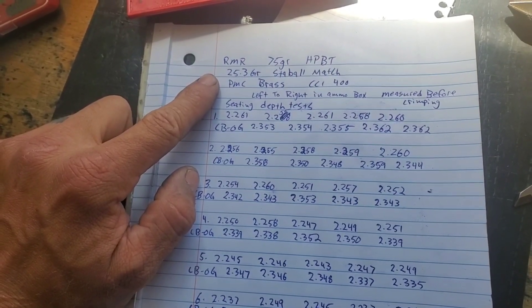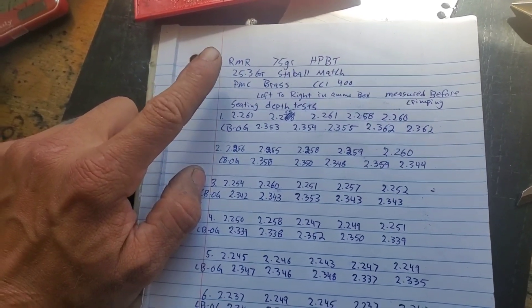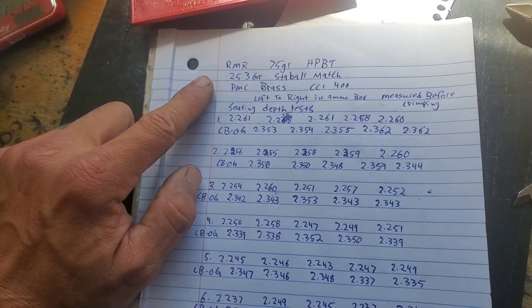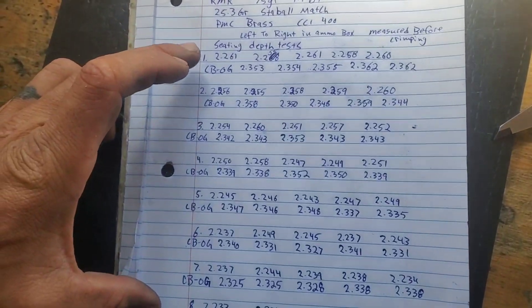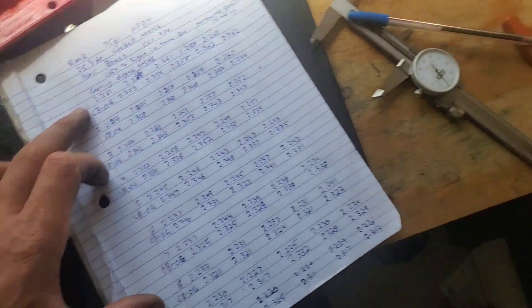I'm in PMC brass here. I verified that they're all 50 of PMC. I've annealed them, I've trimmed them. I've primed them with CCI number 400s.